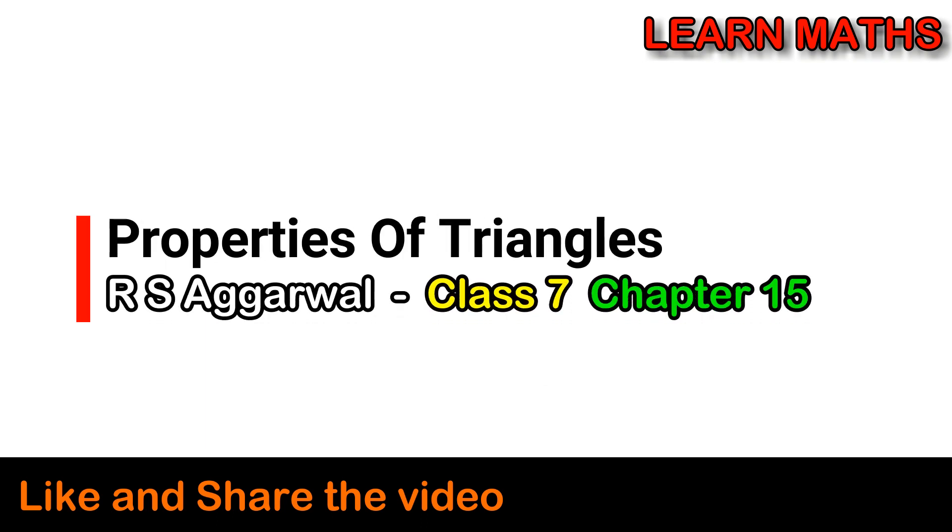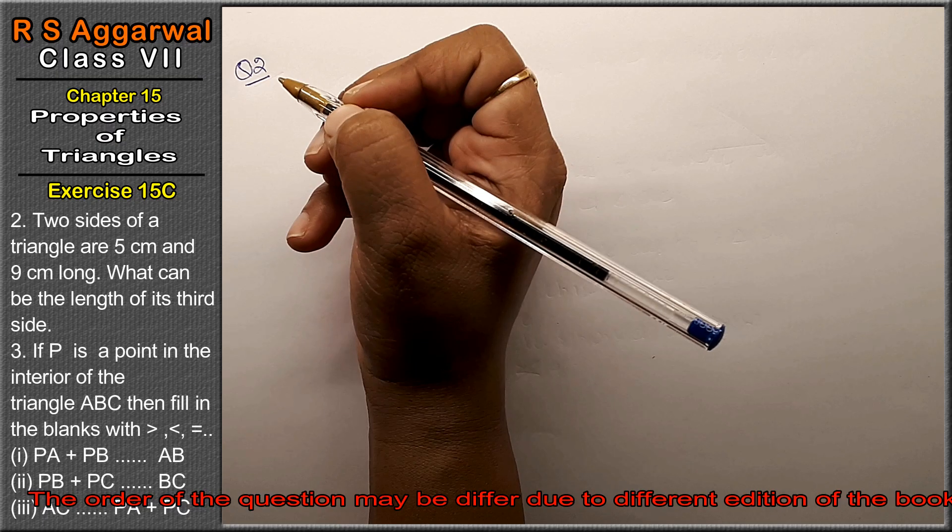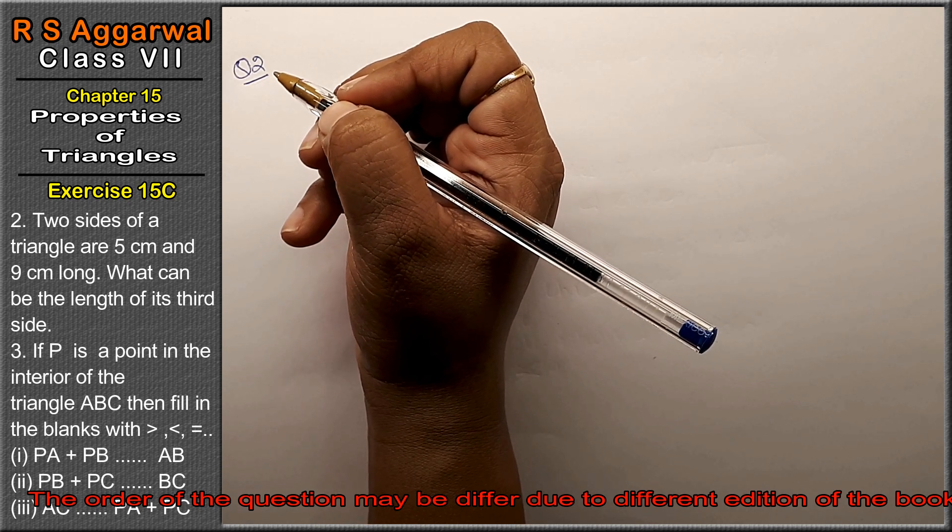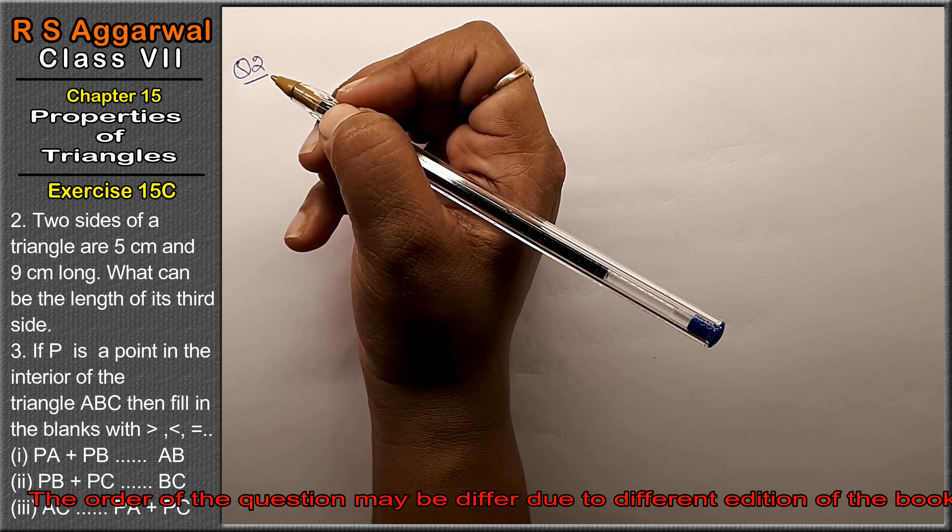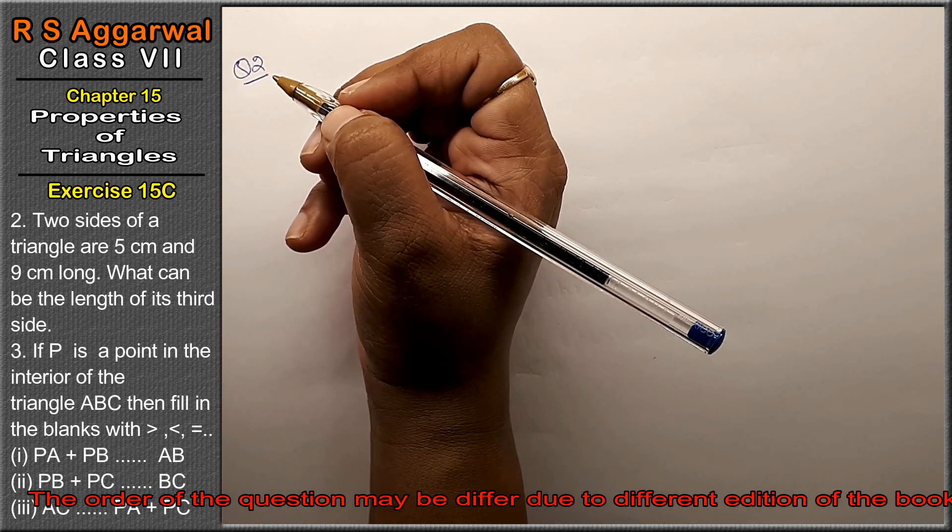Let's do question number 2 of Exercise 15C, Properties of Triangles. Question 2 is: Two sides of a triangle are 5 centimeters and 9 centimeters long. What will be the length of its third side?